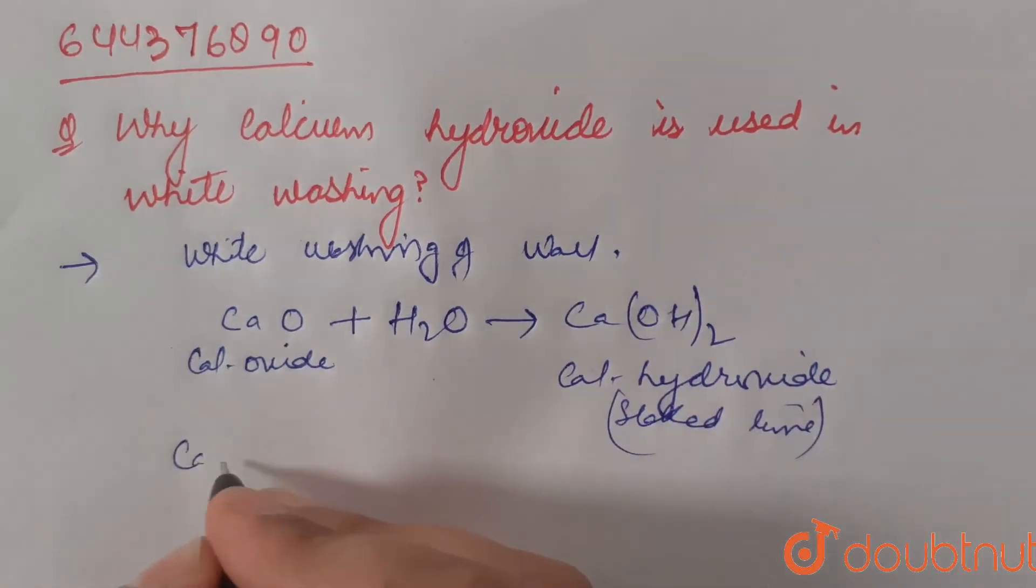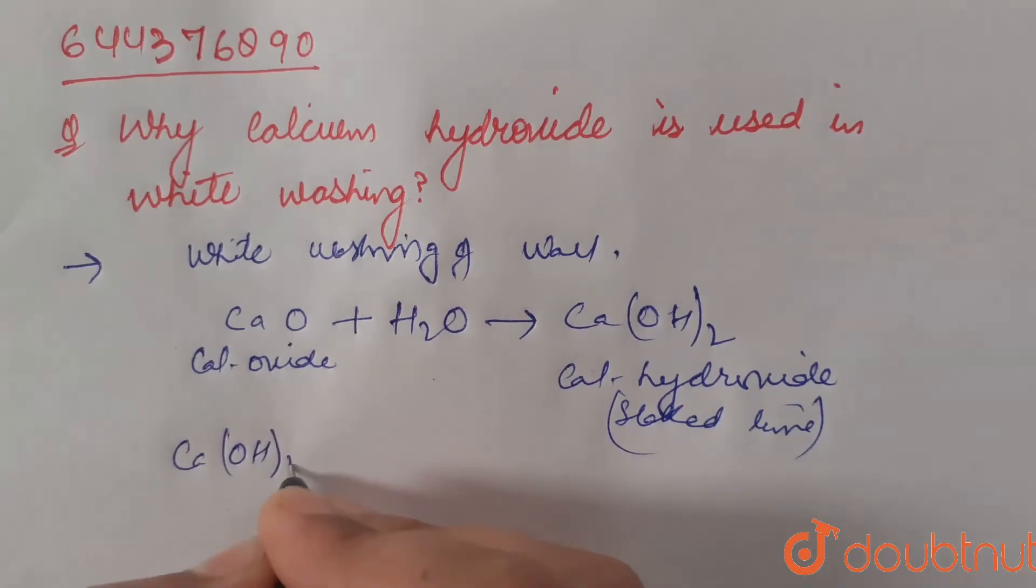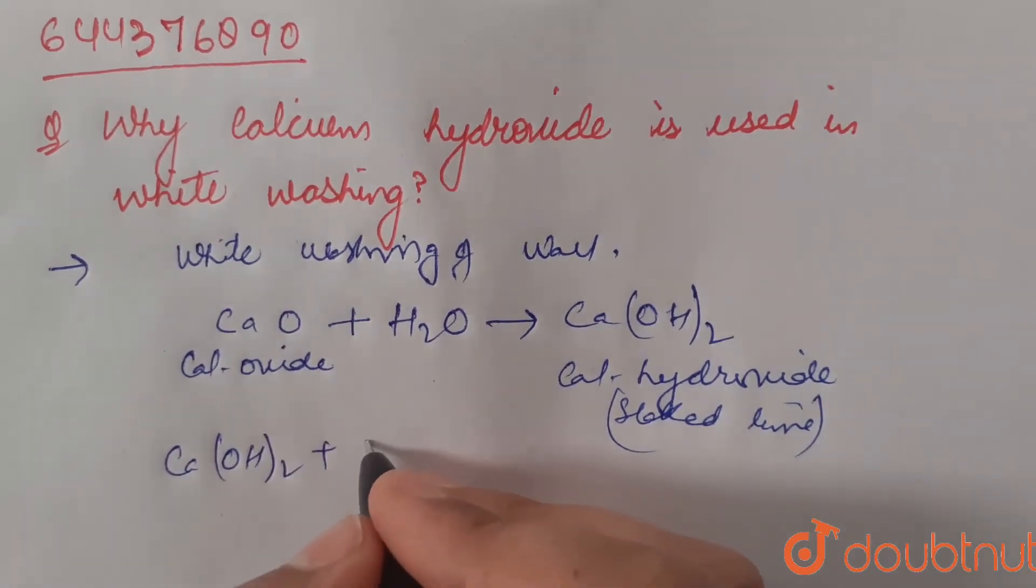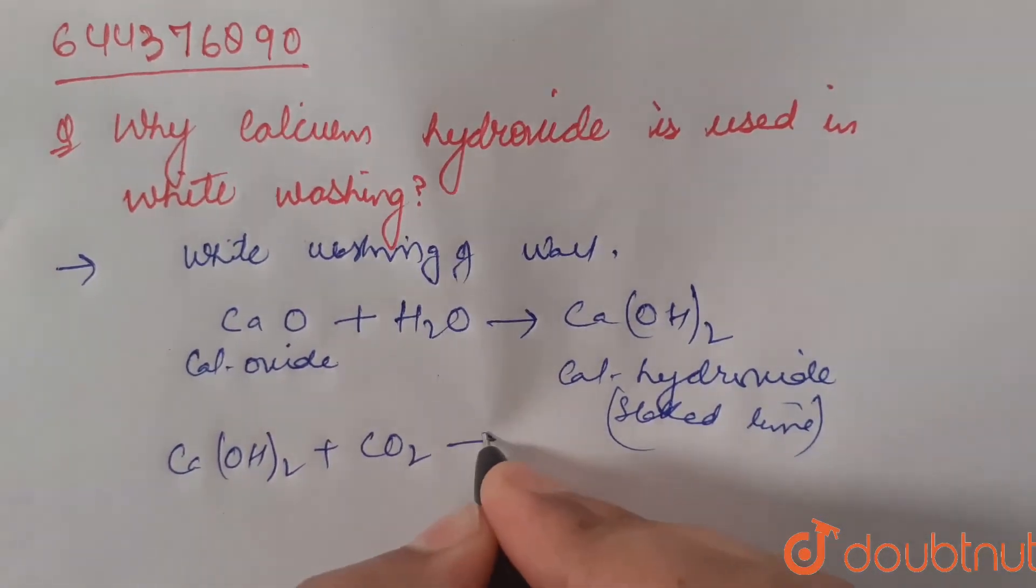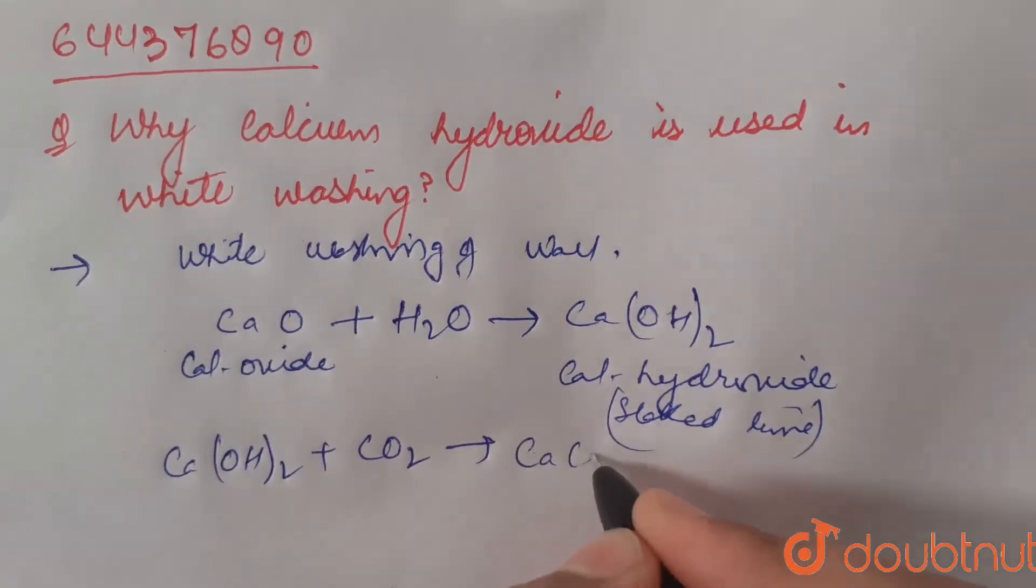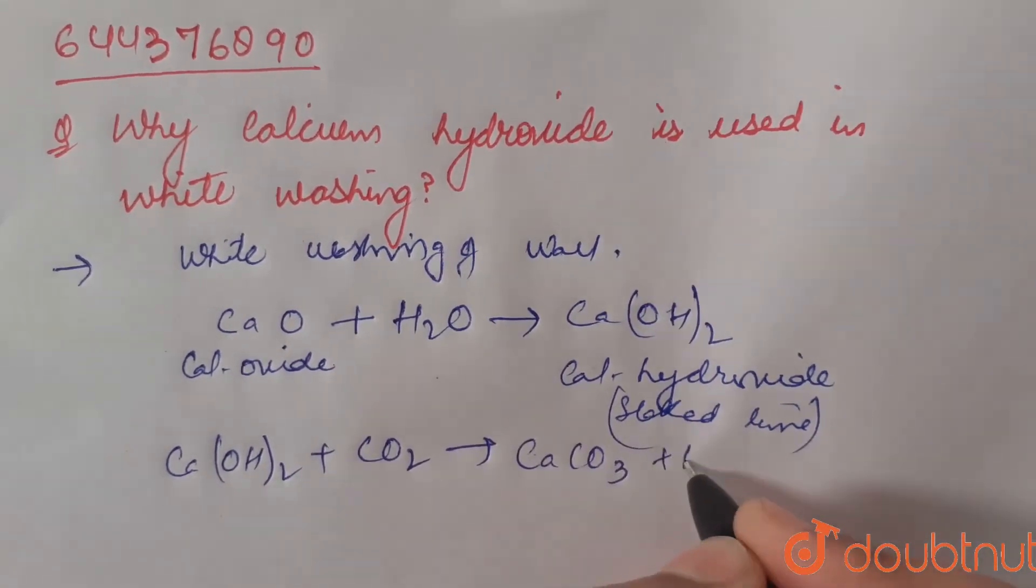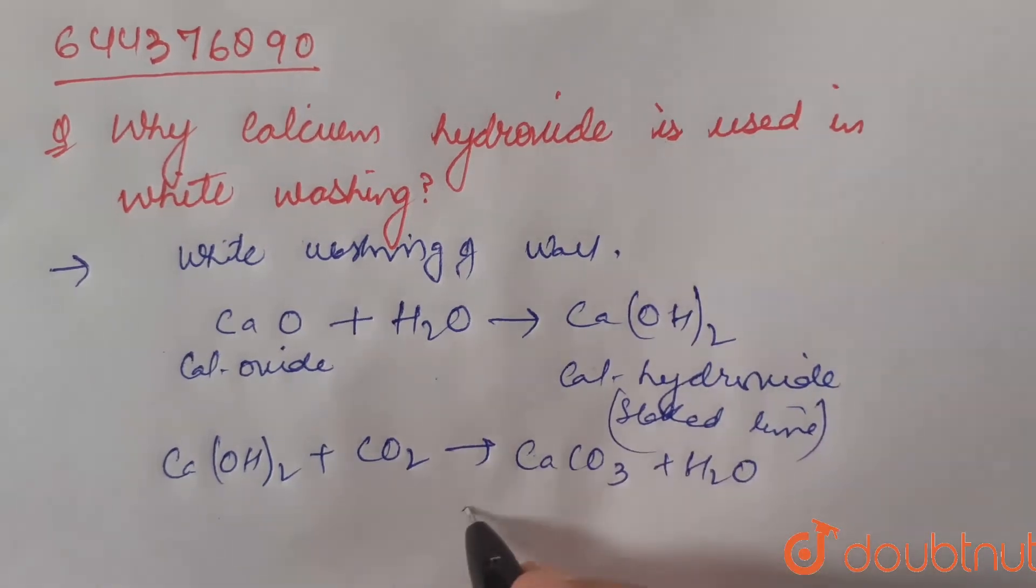Calcium hydroxide is then applied on the walls. And in the atmosphere of carbon dioxide, it reacts with the carbon dioxide and forms calcium carbonate and water. This calcium carbonate...